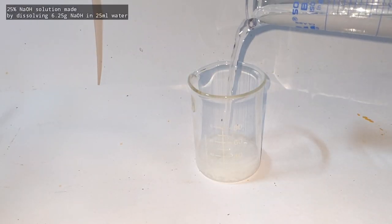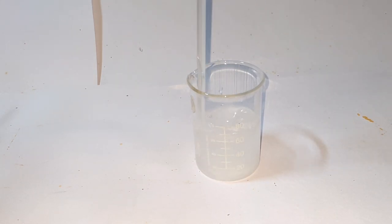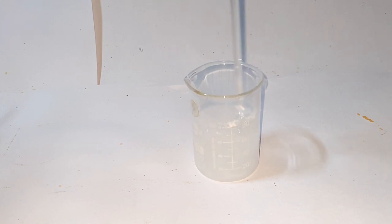While the reaction is going on we make a 25% sodium hydroxide solution by dissolving 6.25 g of sodium hydroxide in 25 ml of distilled water.